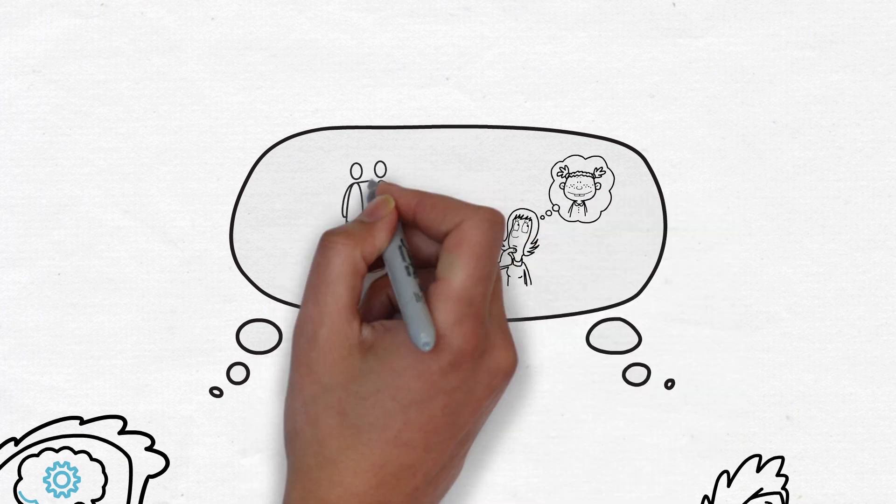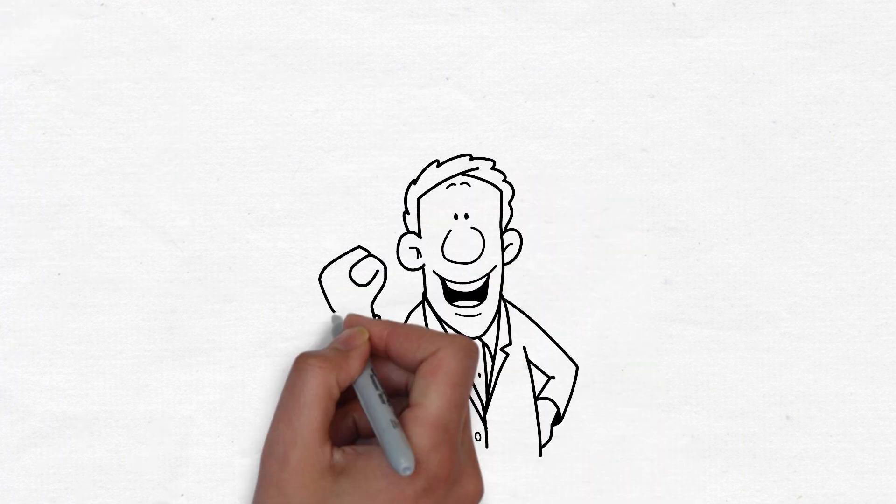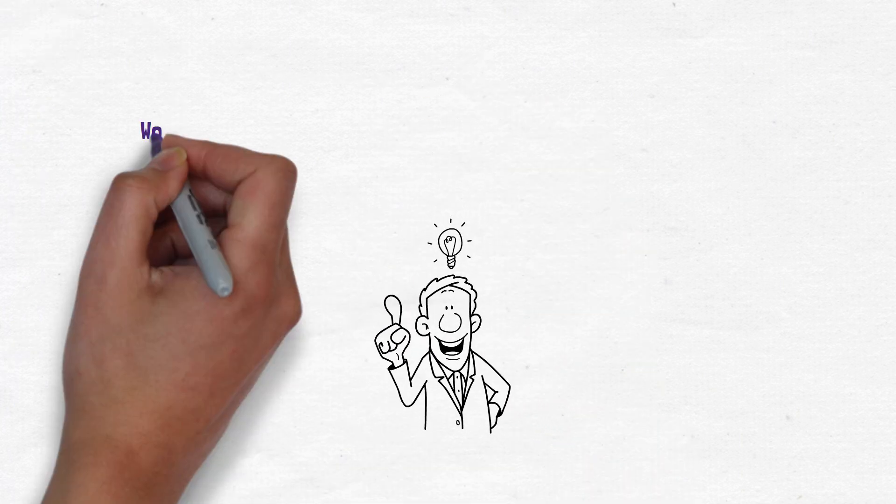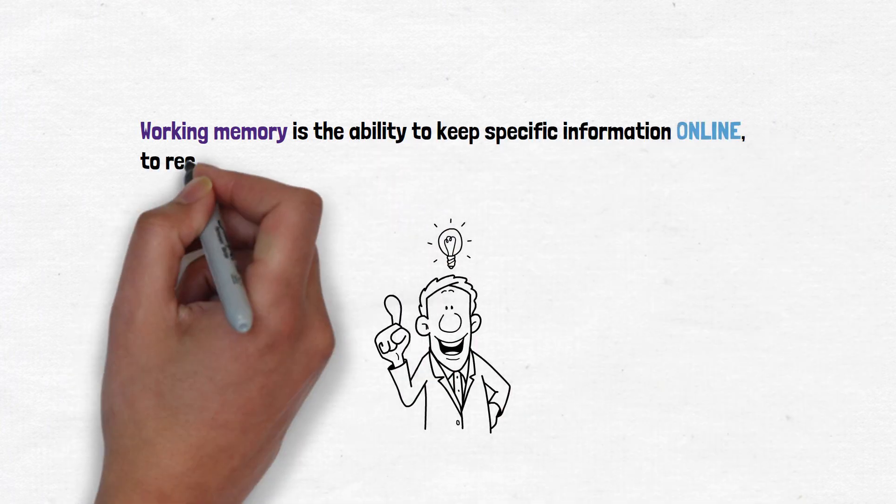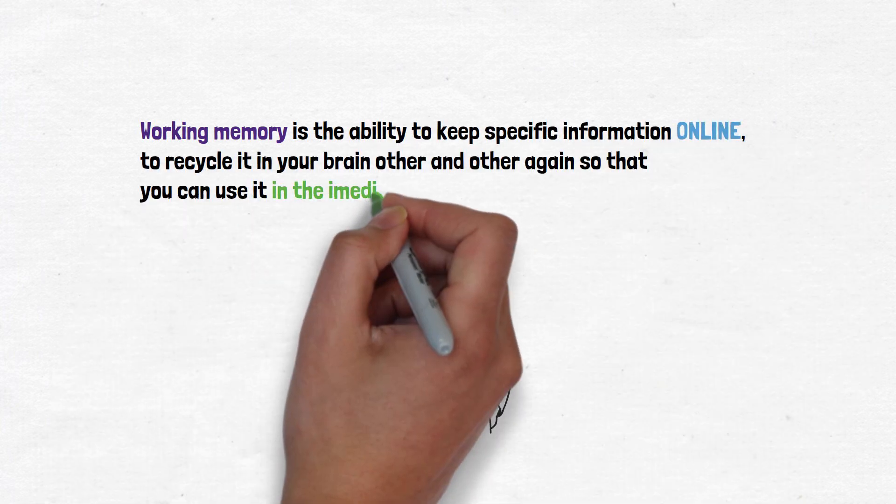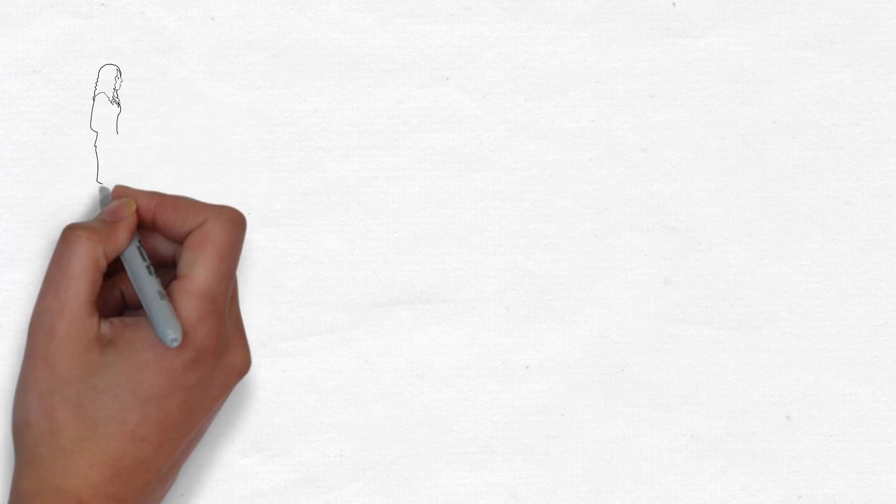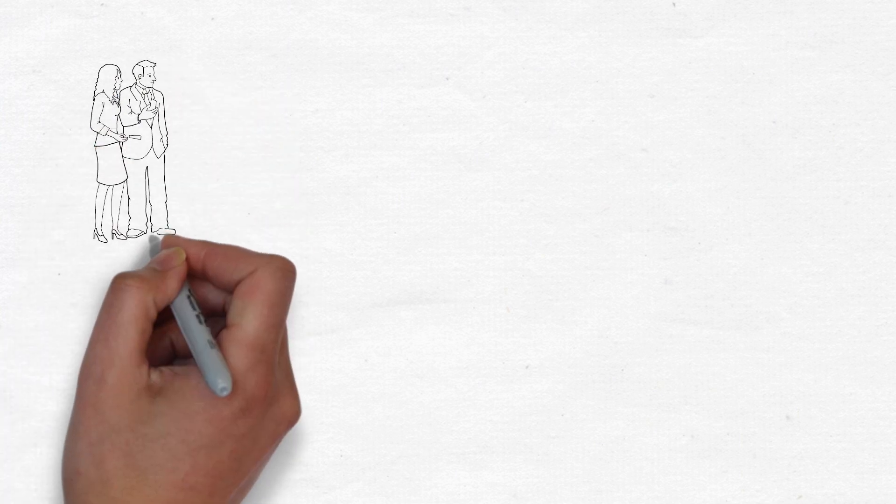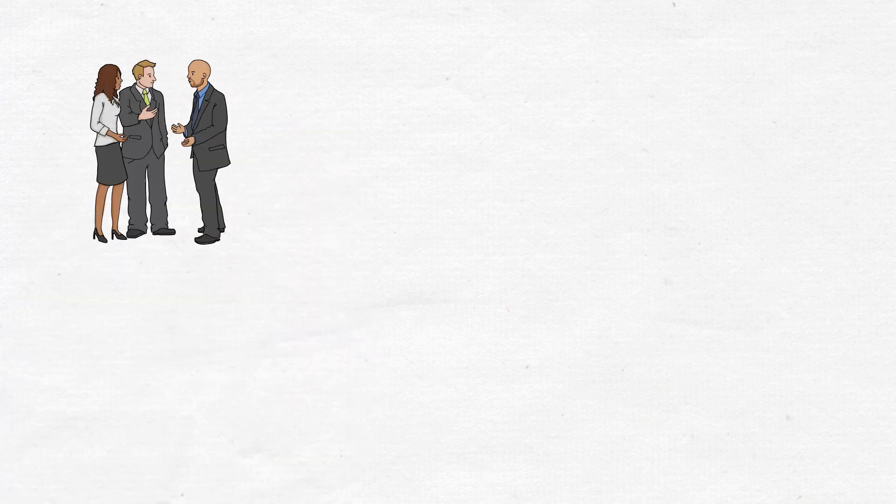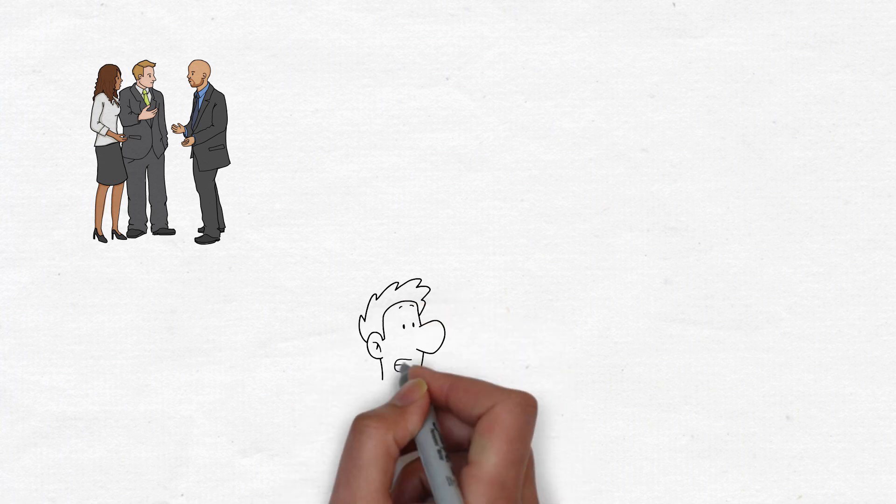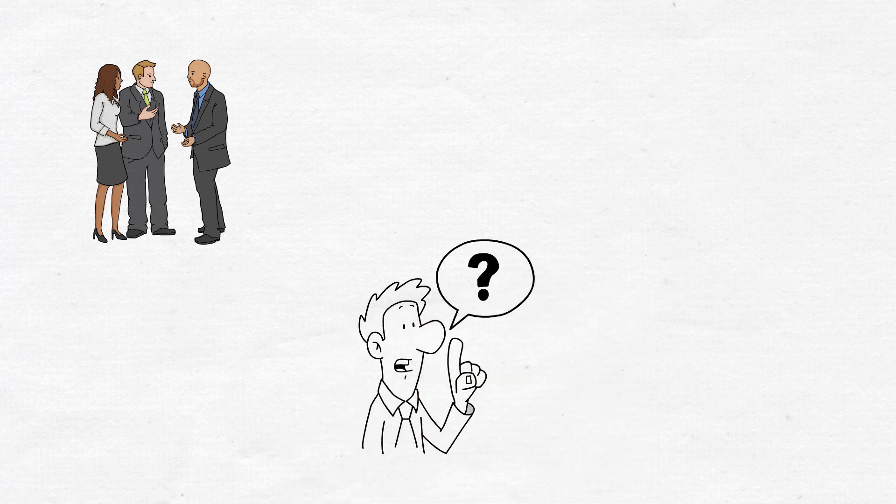However, one aspect of memory in particular that we call working memory is often disrupted. Working memory is the ability to keep specific information online, to recycle it in your brain over and over again so that you can use it in the immediate or short term. A good example of this would be you meet somebody, they tell you their name, they give you their phone number verbally, and you have to walk back to your phone and enter it into your phone.